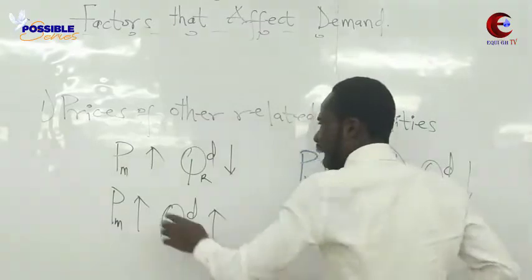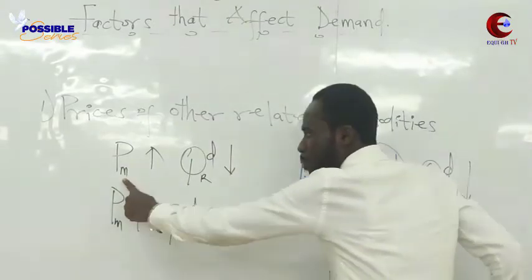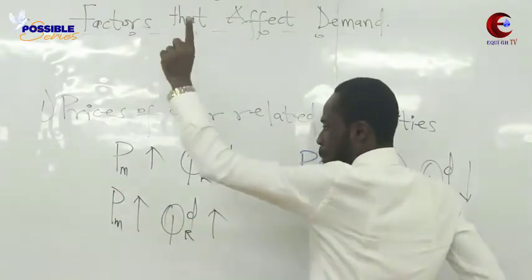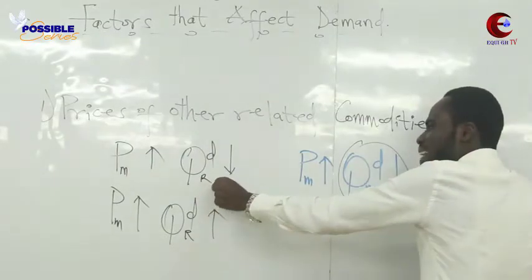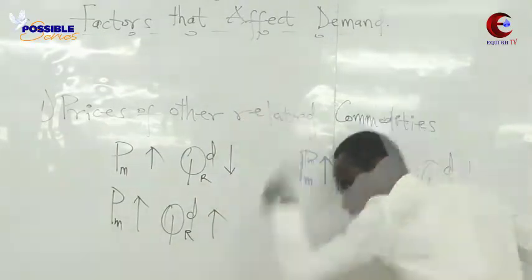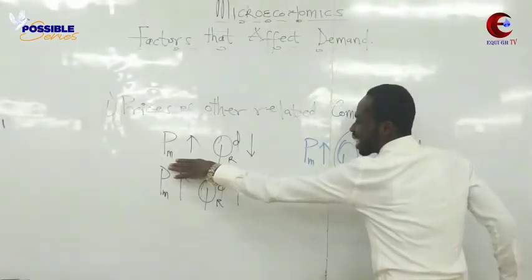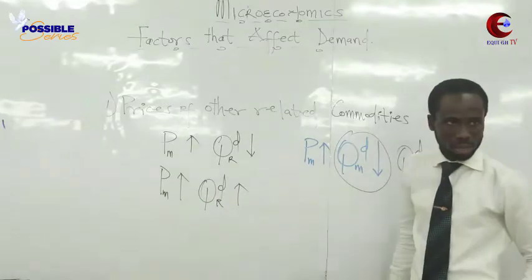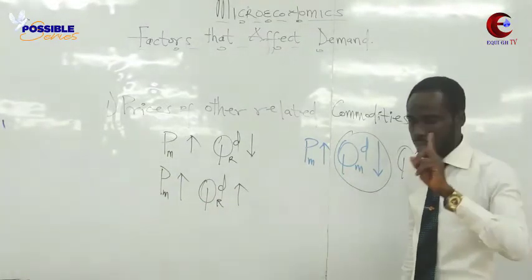So when the price of Milo goes up and the quantity demanded of Richoku comes down, then it means they are complementing each other — they are complementary goods.